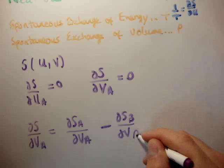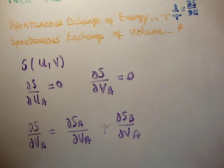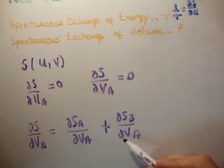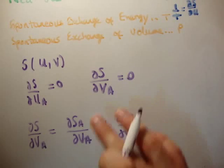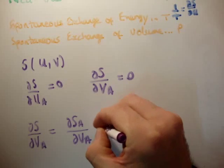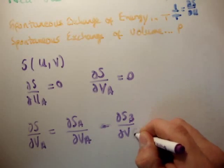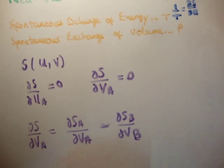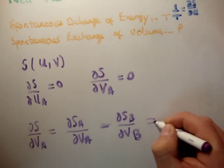That means we can say this is actually minus. Sorry, that should have been A the whole time. I'll write it properly. But we know that del V_A is minus del V_B, so we can write it this way, and that's going to be equal to zero.